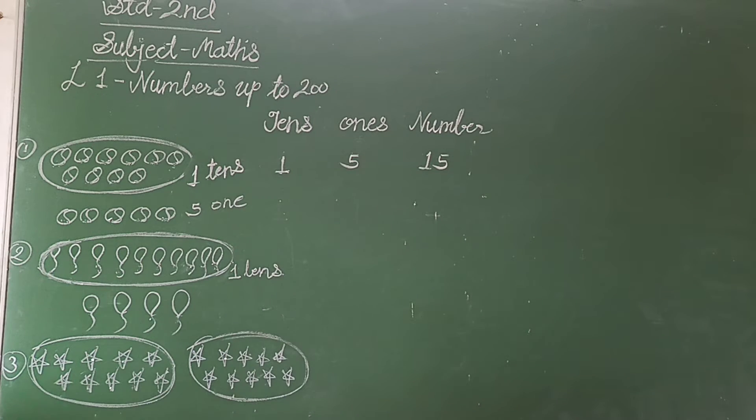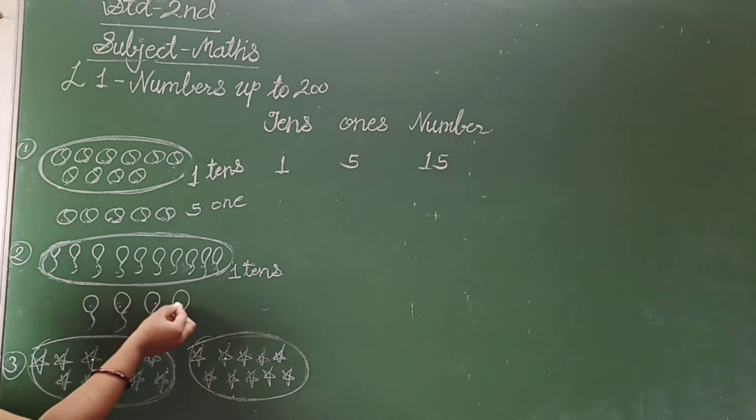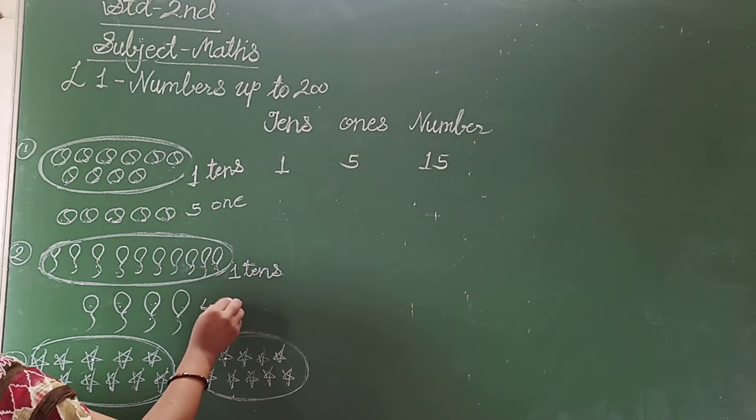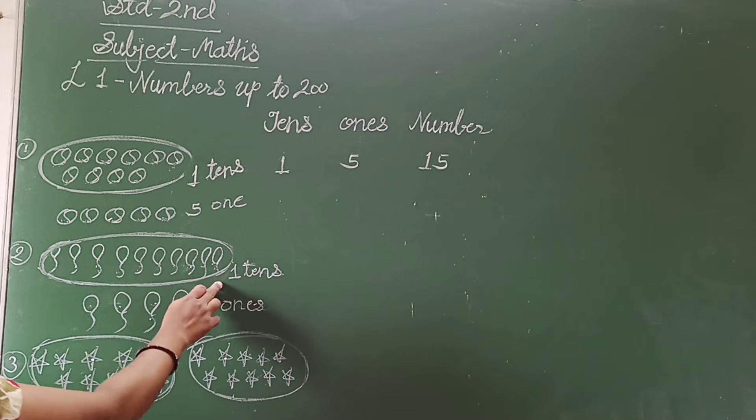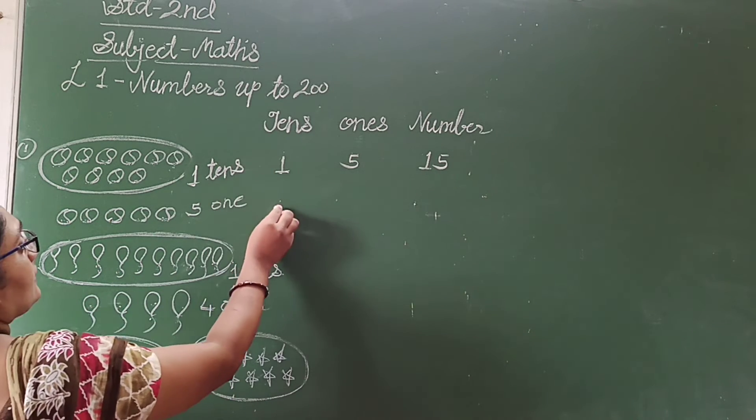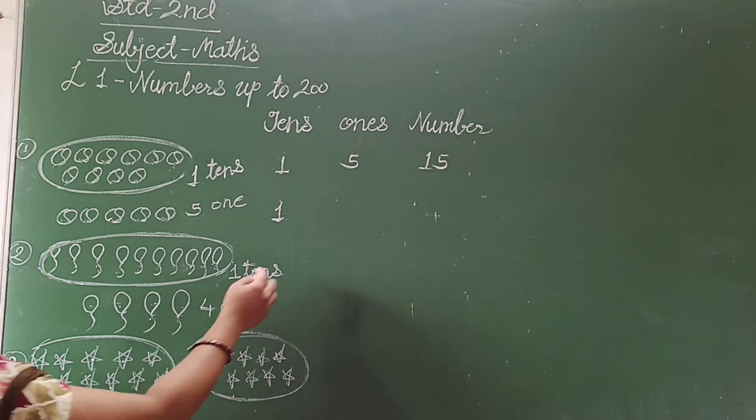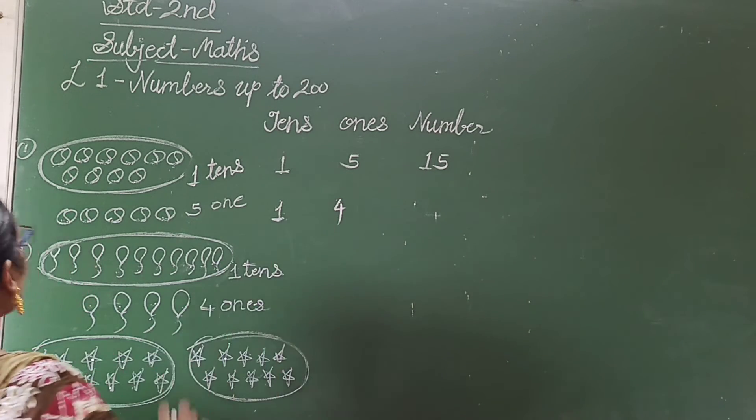And remaining balloons are, count it 1, 2, 3, 4. 4 1s. Means 1 you write in 10th place. And 4 1s you write in the 1s place.